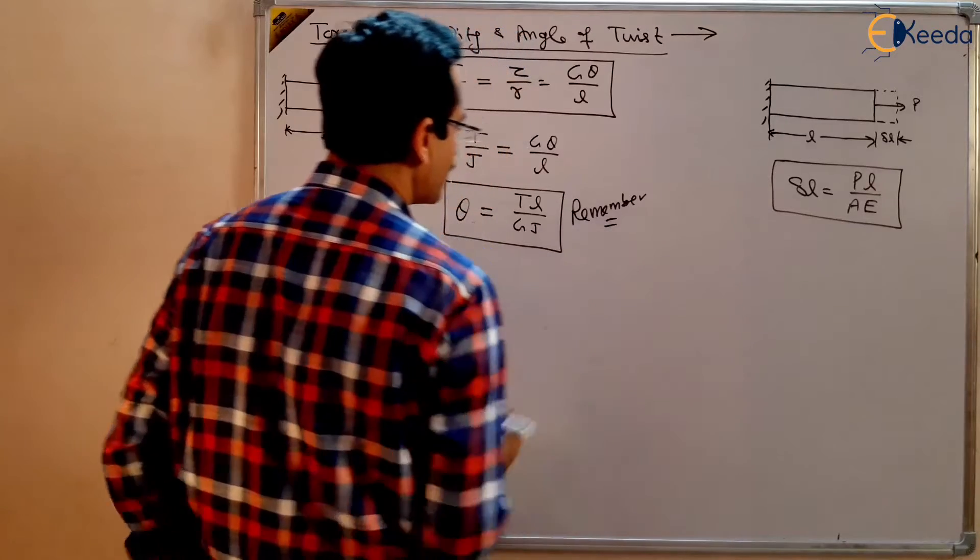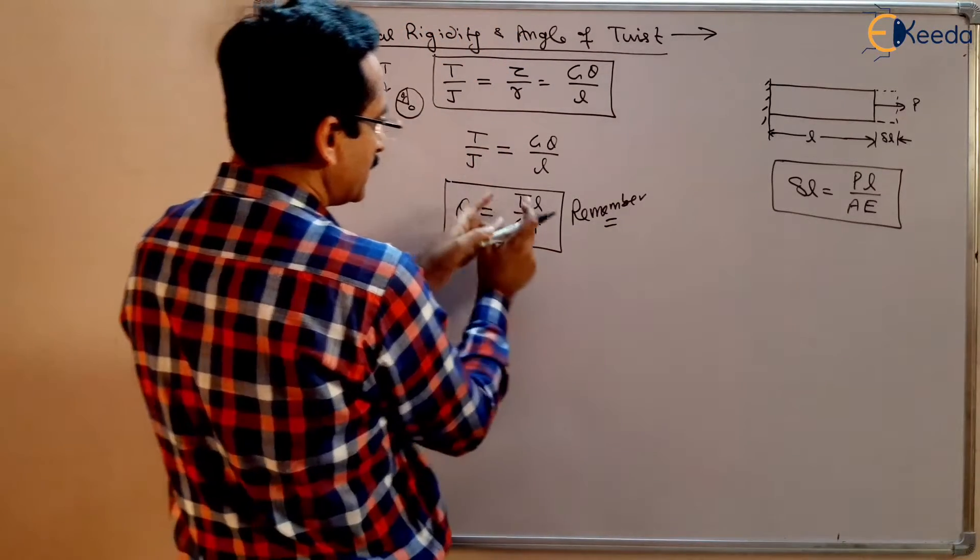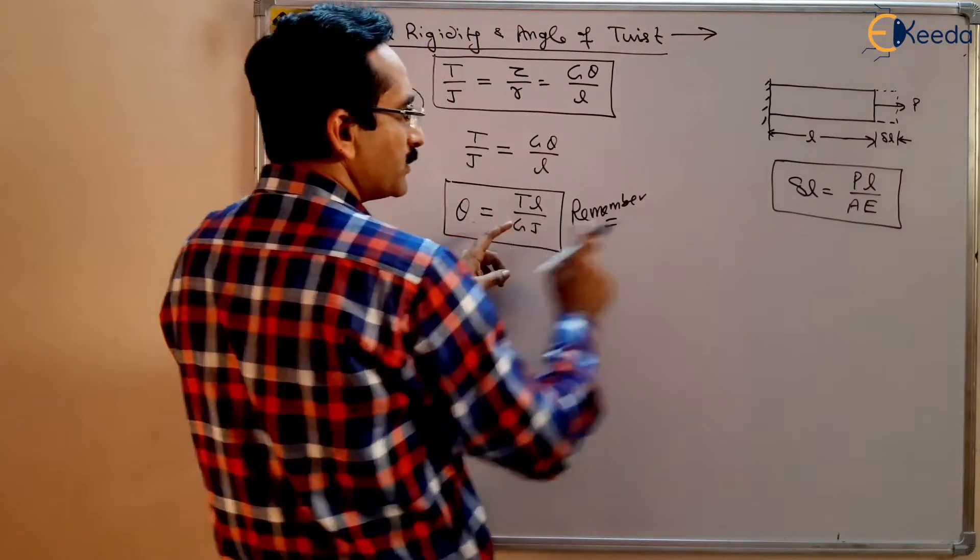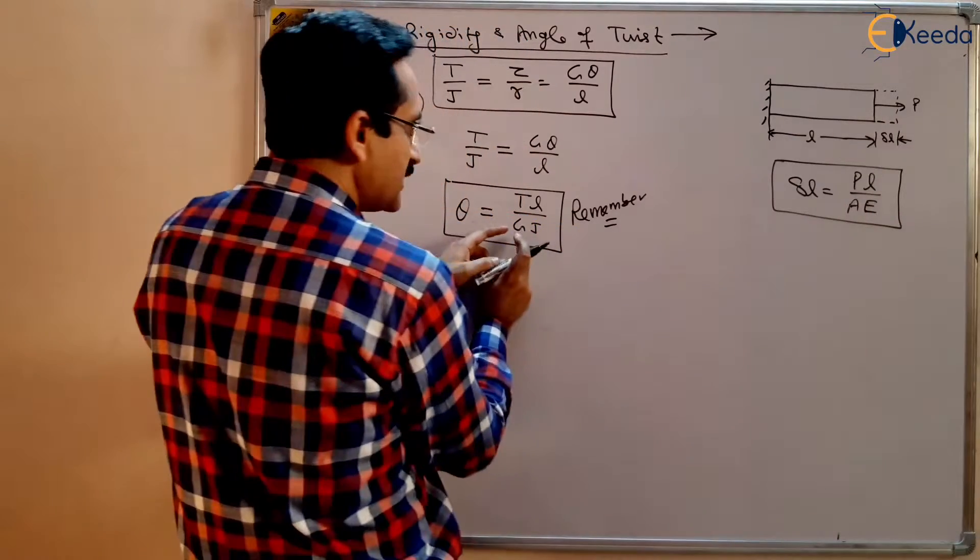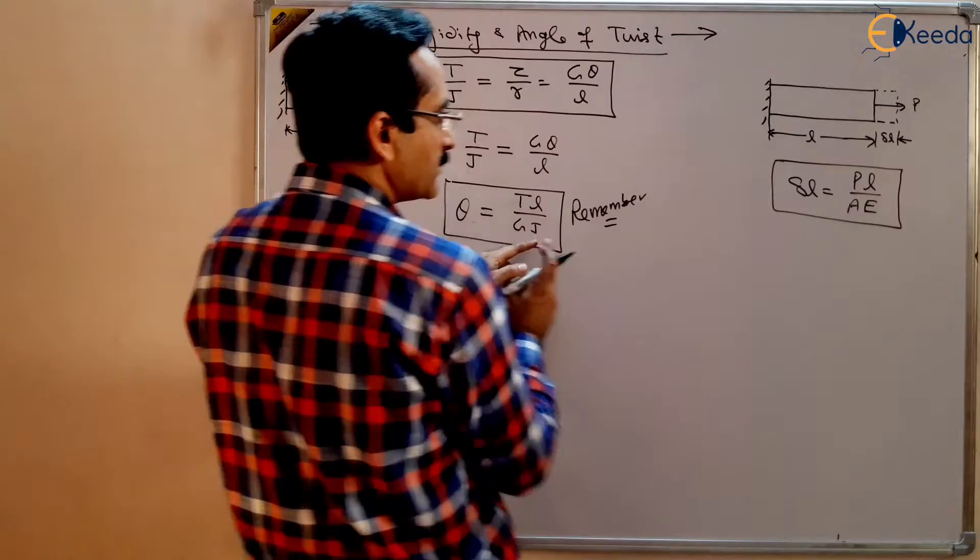This equation should be remembered. This is the angle of twist in case of torque applied torsion, TL upon GJ. T is analogous to P, L is analogous to L.